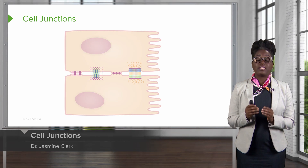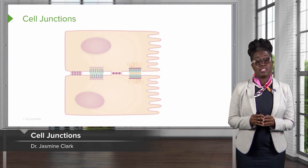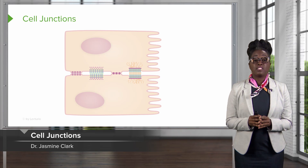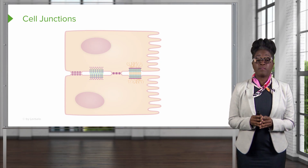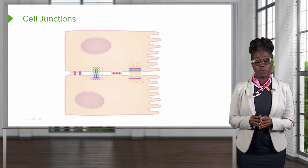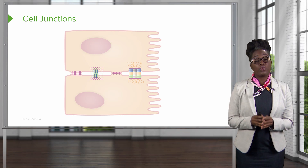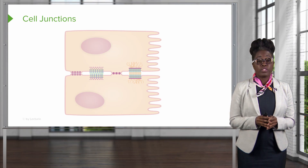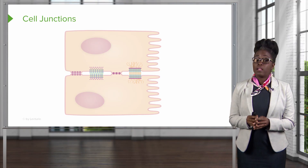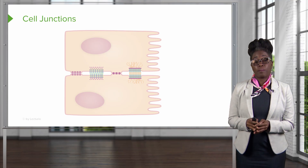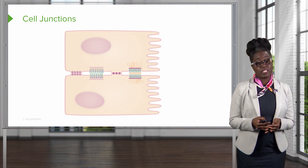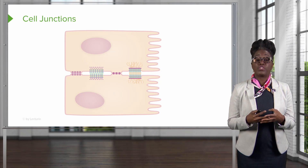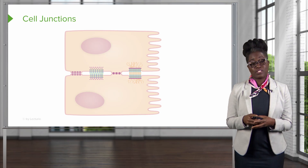Let's discuss how the cells in these tissues are held together, as this is a very important point, and some of these vocabulary words will be useful in the upcoming slides. Cells can be held together in a number of different ways, and these points of contact are referred to as cell junctions.